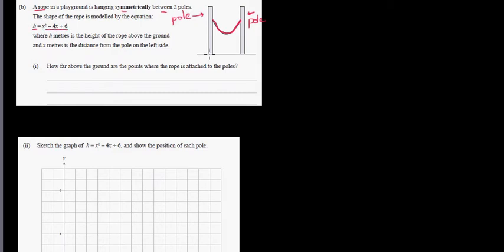The shape of the rope is modeled by the equation h is equal to x squared minus 4x plus 6, where h is the height of the rope above the ground, and x in meters is the distance from the left. So this is your height — this is your y-axis, which is your h-axis — and on the x-axis you're taking x, which is the distance from the left hand side.